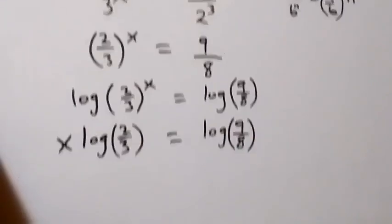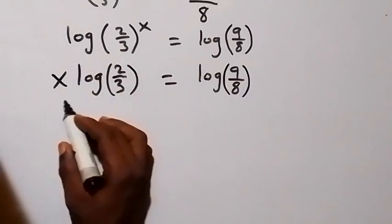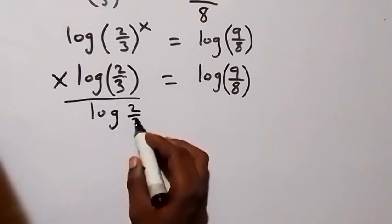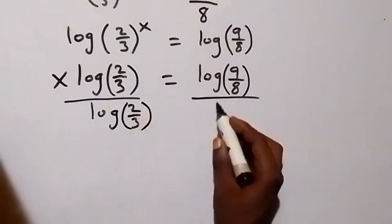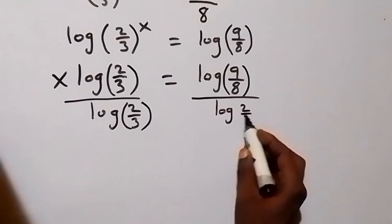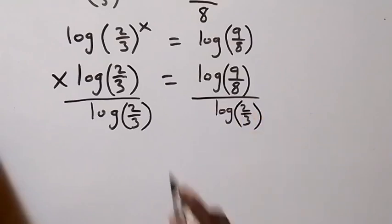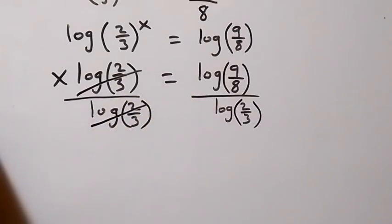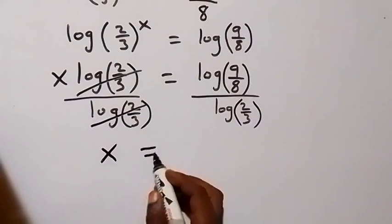Then in the next step, we can divide both sides by log 2 over 3. Also divide this side by log 2 over 3. And from here, log 2 over 3 cancels each other, and we have x left here.